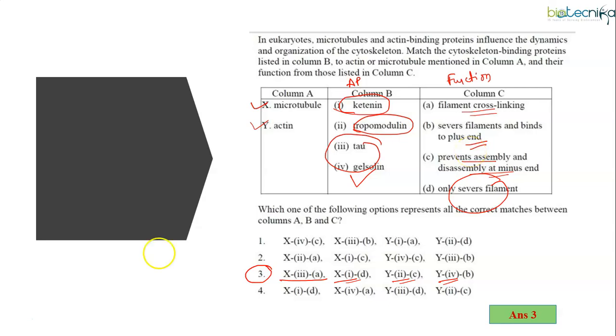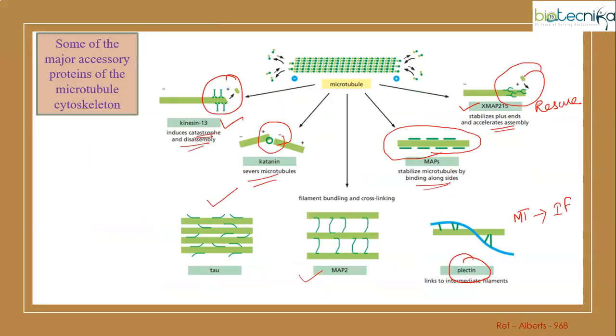It is very important first to understand what proteins come under microtubules and what proteins come under microfilaments. Secondly, you must be clear whether it is bound towards the plus end or minus end. Thirdly, you have to be clear whether it promotes assembly or disassembly. If you are clear with these categories, it will be easy to get an answer. Now based on this, let's take up another question.